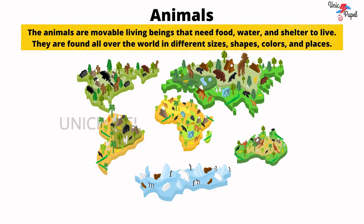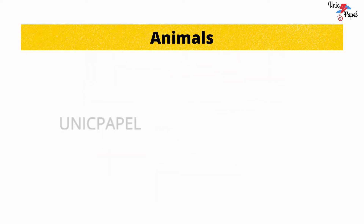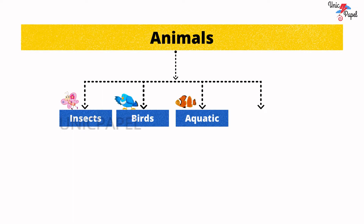We can categorize animals into 4: insects, birds, aquatic animals, and land animals.